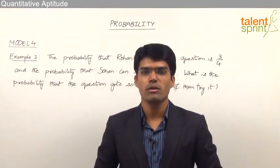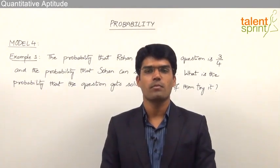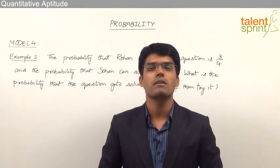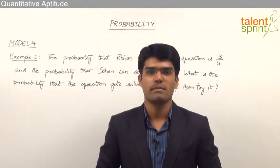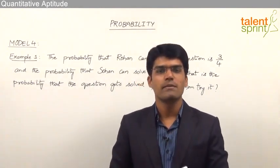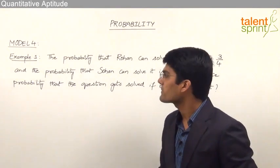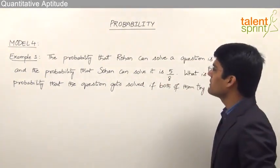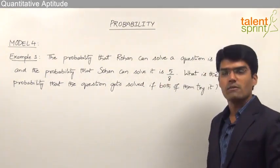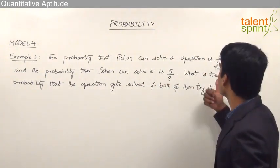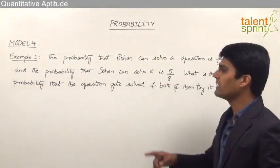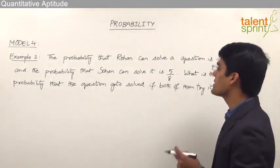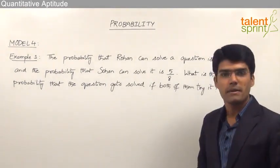Let us now take the fourth model from this topic of probability where we shall take up some typical questions from this topic. Let us have a look at the first one. The probability that Rohan can solve a question is 3 by 4 and the probability that Sohan can solve it is 5 by 8.